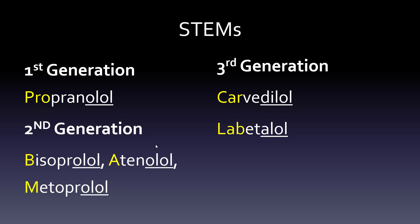These third generation drugs are clever in their stems and kind of fix the '-olol' problem. The third generation drugs vasodilate — you see D-I-L-O-L in carvedilol, and you see A for alpha blocker in labetalol. That little change, the DIL and the A for alpha blocking, helps you know these are third generation. But you still need to tell the difference between first and second generation.